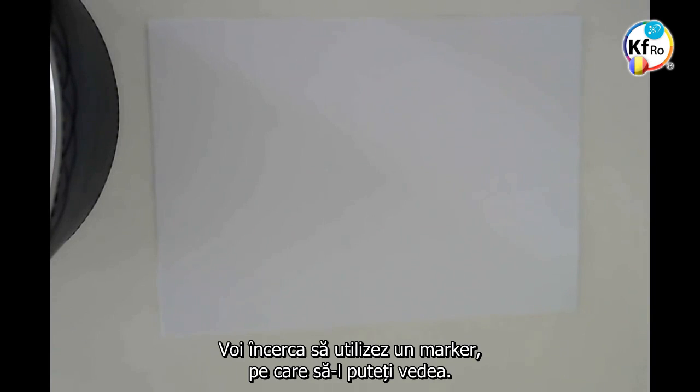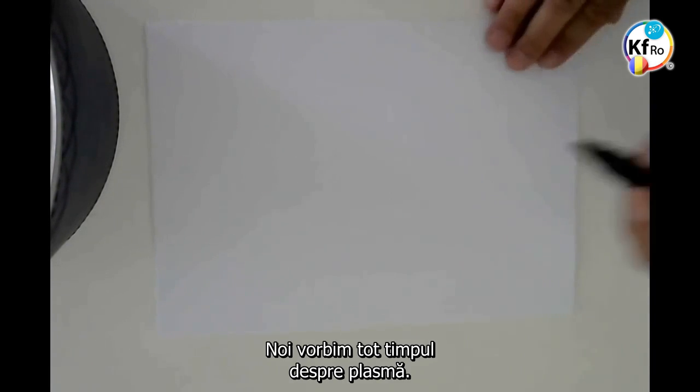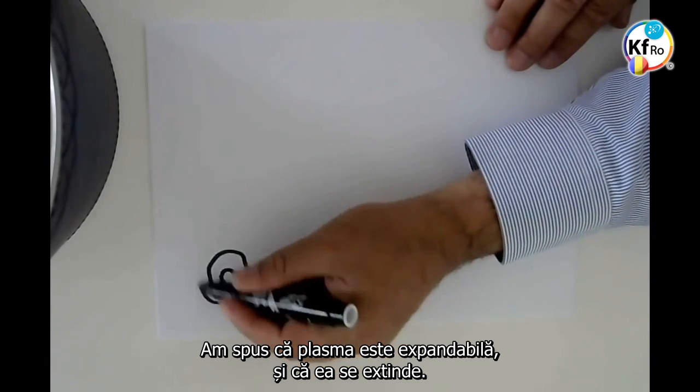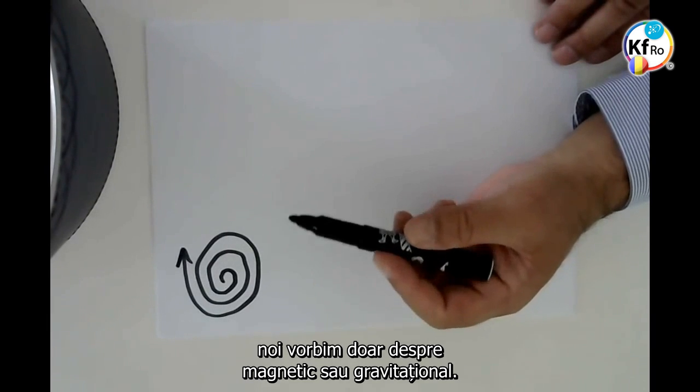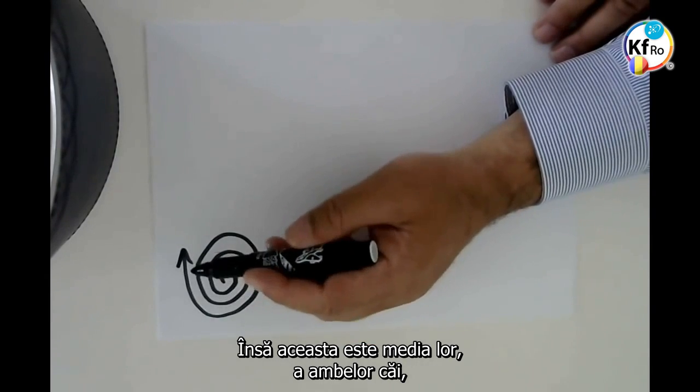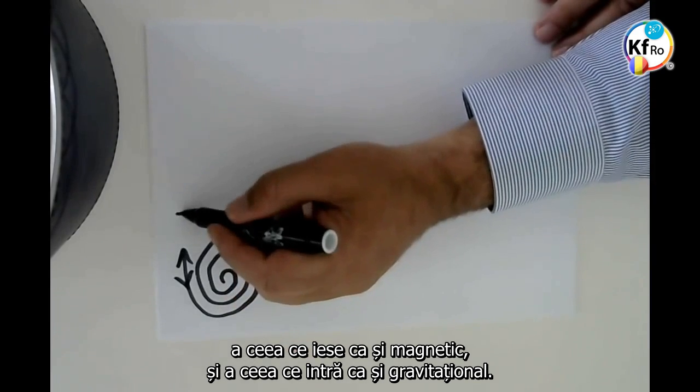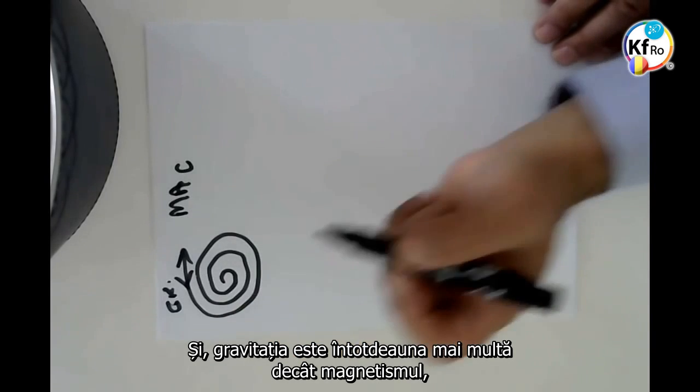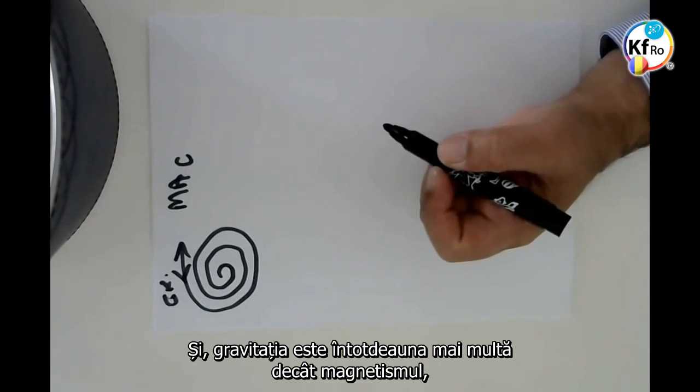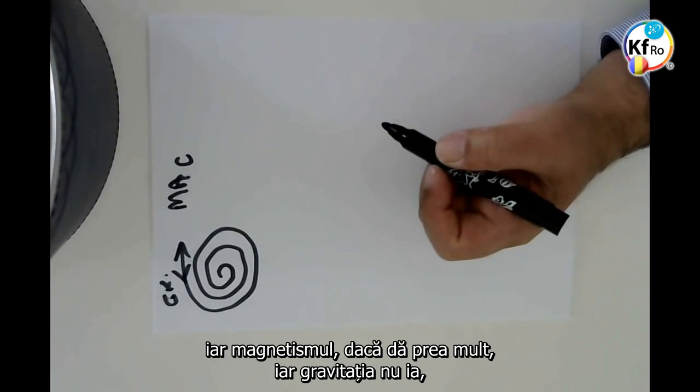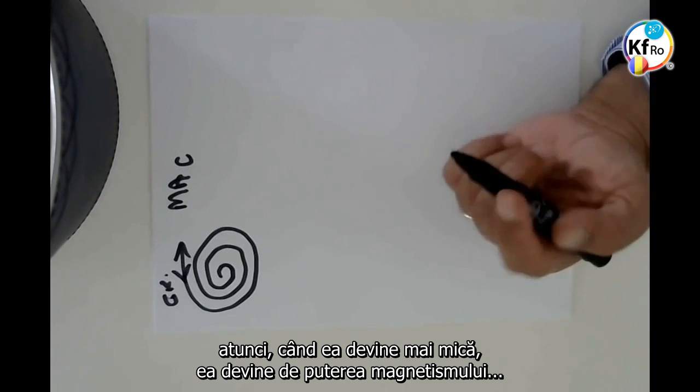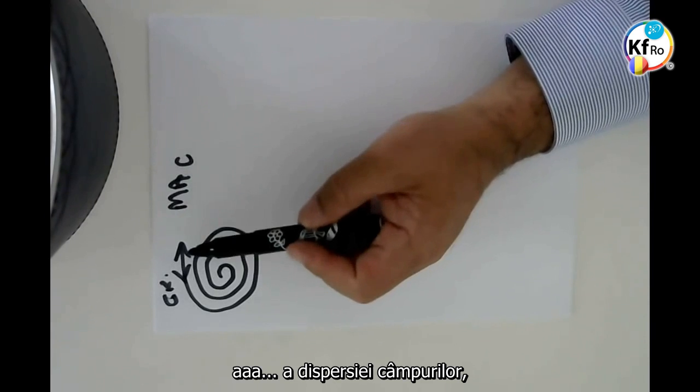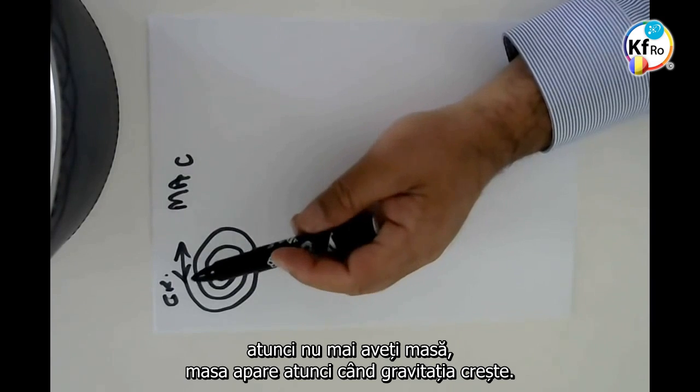If we go back to the original teaching, we spoke all the time about the Plasma. We said the Plasma is Expansional and it expands. When we draw it like this, we only speak about Magnetical or Gravitational. This is the mean average both ways, of what is given out as Magnetical and what is brought in as Gravitational. Gravitational is always more than Magnetical. If the Magnetical gives too much and Gravitational does not take in plus one or at least higher order strength, then you don't have a mass. The mass comes when the gravity increases.